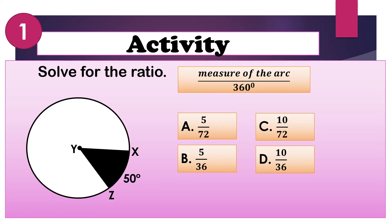Let's have an activity. Number 1: solve for the ratio in circle Y, where the measure of the arc is 50 degrees. We determine the measure of the arc over 360 degrees. What is the ratio? Is it A) 5 over 72, B) 5 over 36, C) 10 over 72, or D) 10 over 36? The answer is B, 5 over 36.